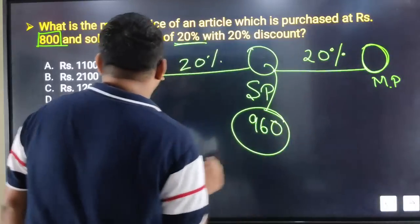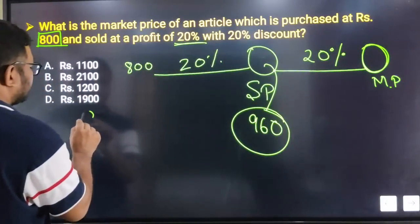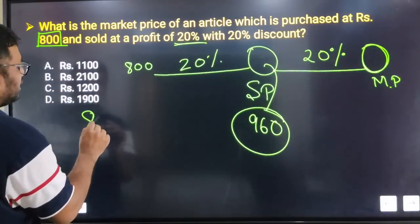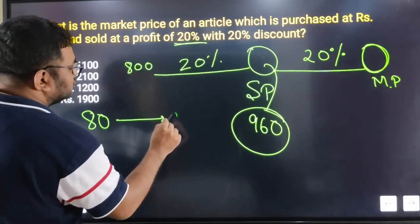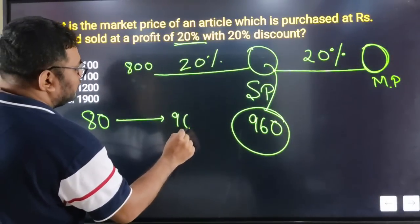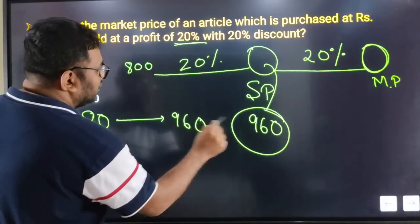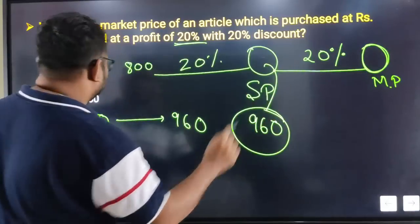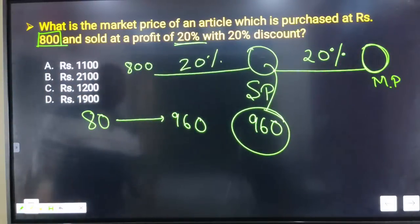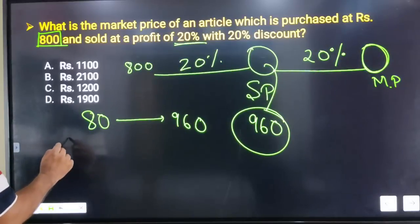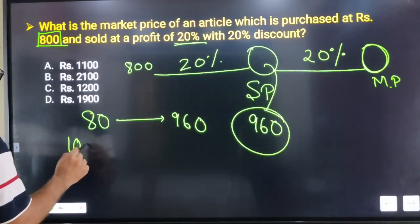If you have a 20% discount, then the selling price equals 80% of the market price. So 80% of the market price is equal to 960.